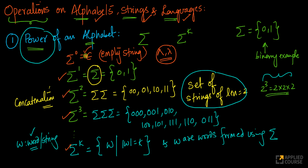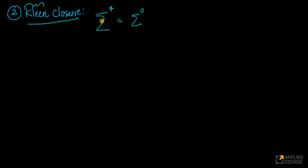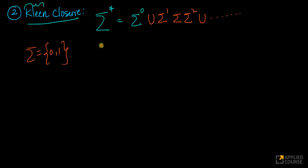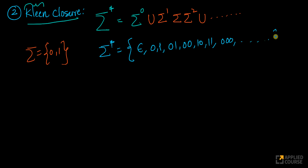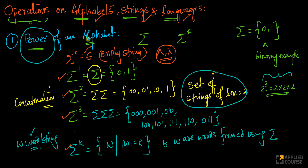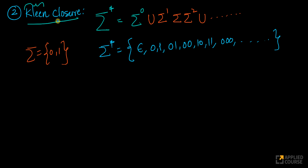So you can define the Kleene closure of sigma, or sigma star, as the union of sigma power 0, sigma power 1, sigma power 2, and so on. The union of all of them is your Kleene closure. So sigma star is the set containing the empty string, strings of length 1, strings of length 2, strings of length 3, and so forth.